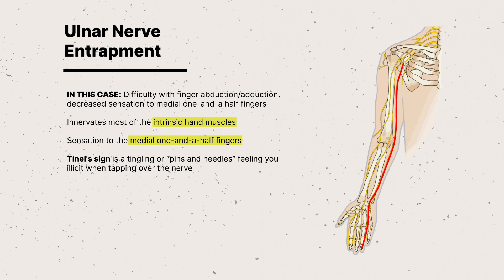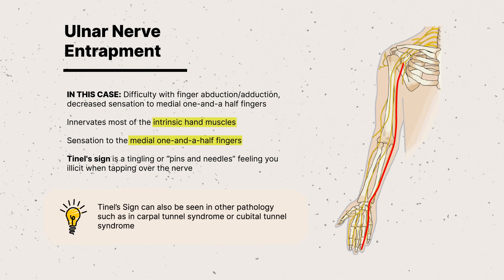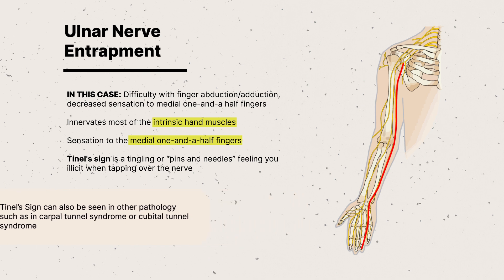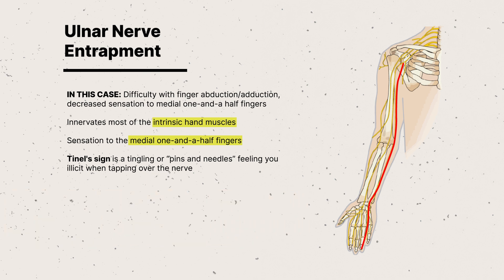This finding is commonly seen in conditions such as carpal tunnel syndrome, affecting the median nerve, or cubital tunnel syndrome, affecting the ulnar nerve. Given the patient's occupation and symptoms, the presentation is suggestive of ulnar nerve entrapment, often associated with prolonged periods of elbow flexion or direct pressure on the area.